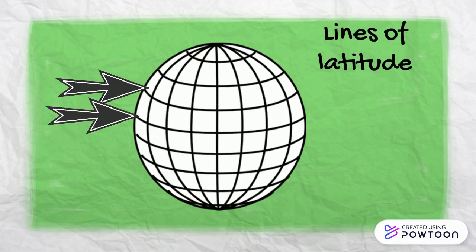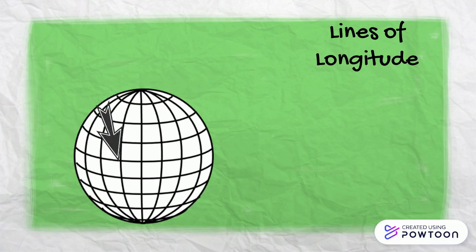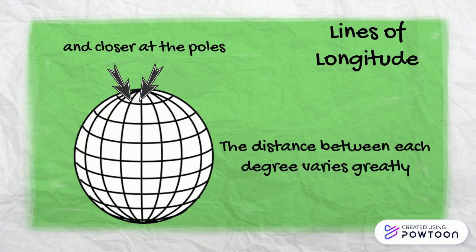Degrees of latitude are parallel, so the distance between each degree remains almost constant, but since degrees of longitude are farthest apart at the equator and closer at the poles, their distance varies greatly.